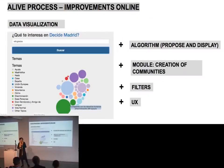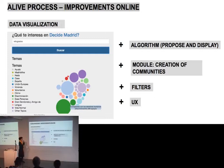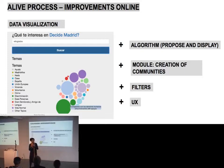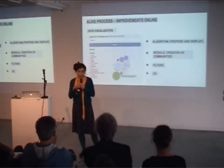The City Hall is working on this issue to make it a more alive tool — working on data visualization to make citizens more willing to engage with their interests, creating a fairer algorithm that also shows interesting content, and creating a community module. Two-thirds of proposals are duplicated, meaning people interested in the same issues are not meeting and not combining their efforts.